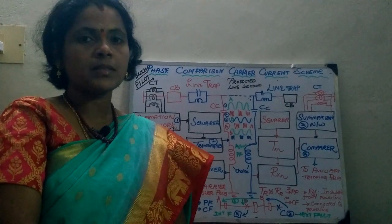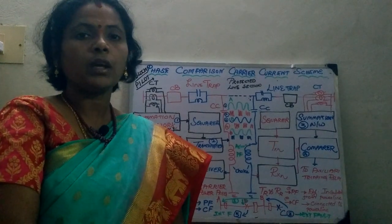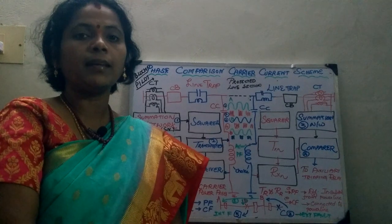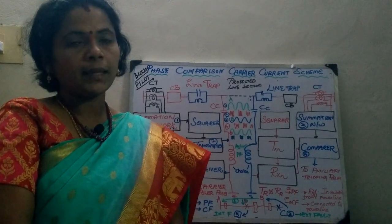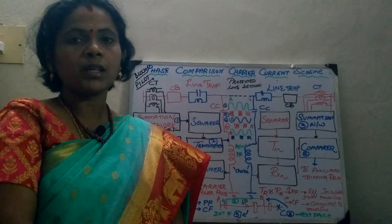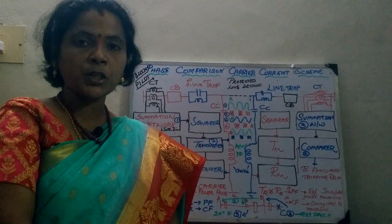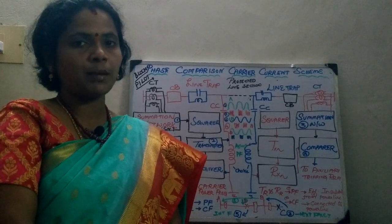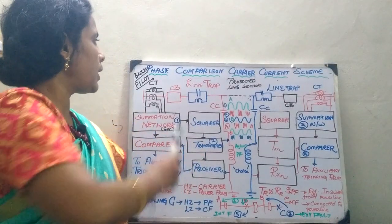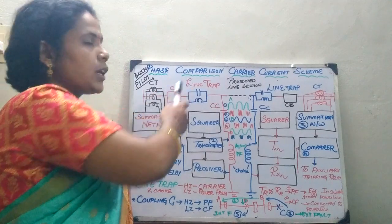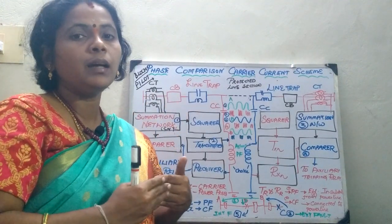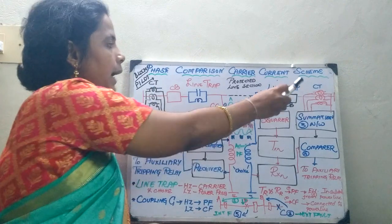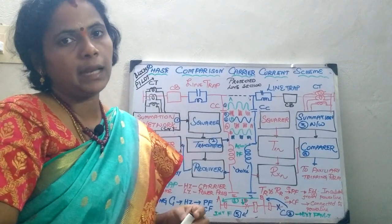In the previous session, we have seen the introduction of carrier current scheme. We have seen two schemes: one is the directional comparison scheme and another is the phase comparison scheme. In the phase comparison scheme, you compare the phase of the currents entering at both ends of the line.